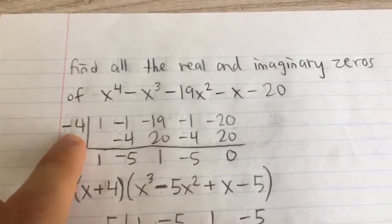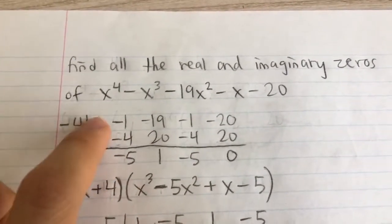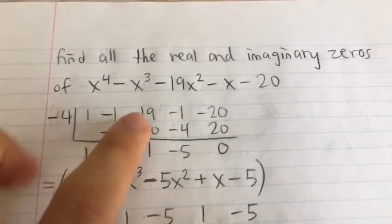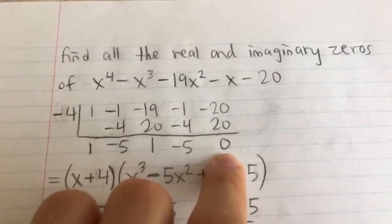But if you try negative 4, it is a zero. So you can see here, I did my synthetic division, brought down the first number, multiply, add, multiply, add, multiply, add, etc. I got a zero.